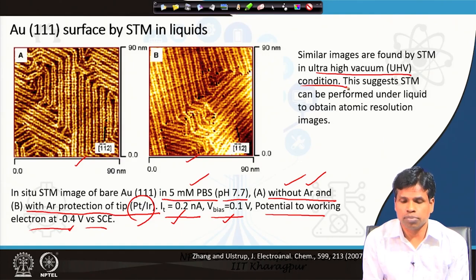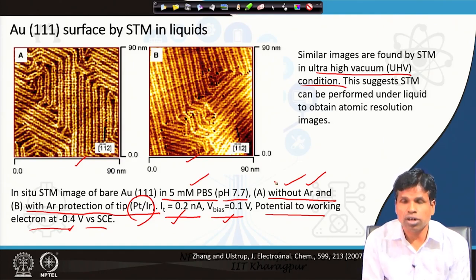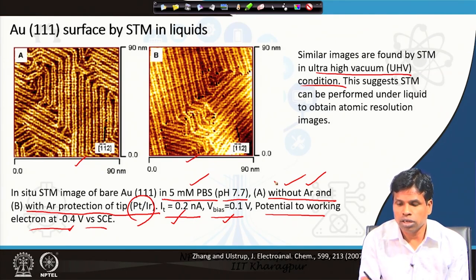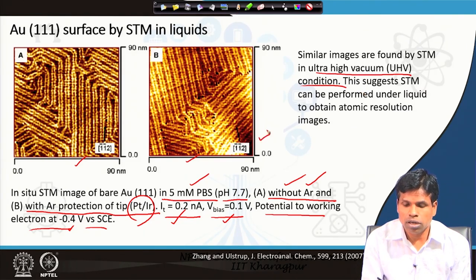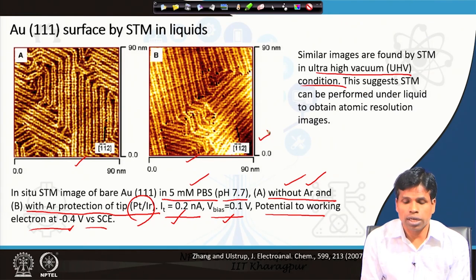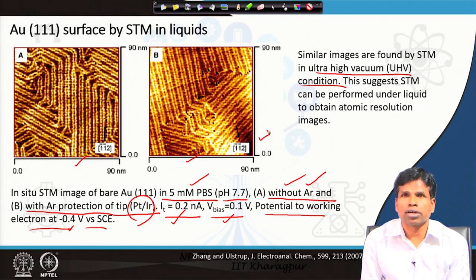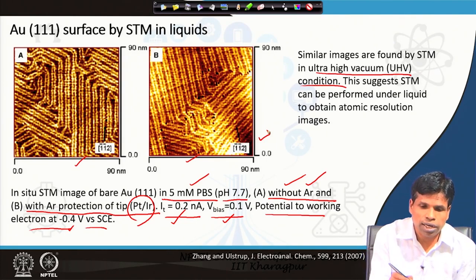It is important to note that the resolution and quality of the image obtained was almost the same as that done in ultra-high vacuum (UHV) conditions. UHV is normally used in STM imaging because in UHV we can have a clean surface without adsorbates or impurities. However, without ultra-high vacuum, measuring under liquid still provides atomic resolution similar to that achieved in UHV conditions.